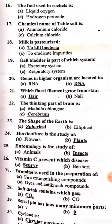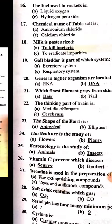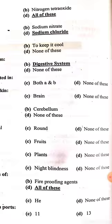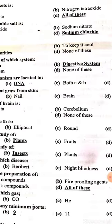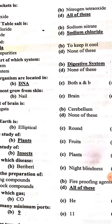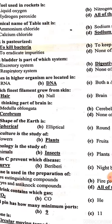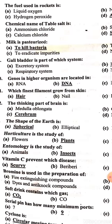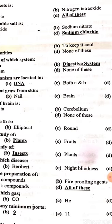Which material conducts both heat and electricity? Solid metals. The fuel used in rockets includes nitrogen tetraoxide, liquid oxygen, and hydrogen peroxide.